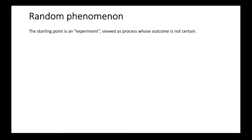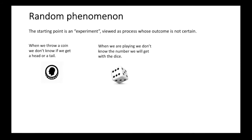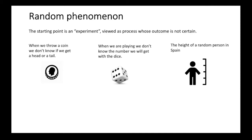The starting point when we want to speak about a probabilistic model is a random phenomenon. This is a process where we don't know the outcome a priori. For example, when we throw a coin, we don't know if we will get a head or a tail. Similarly, when we throw a dice, we cannot predict the number we will get. More in general, we can also think as a random phenomenon the height of a person in Spain — we would not know a priori the measure we will get.